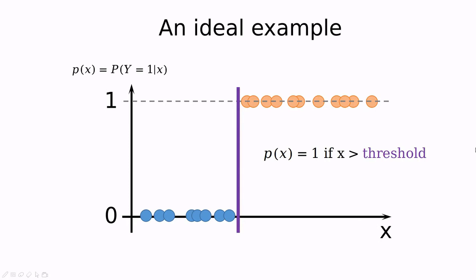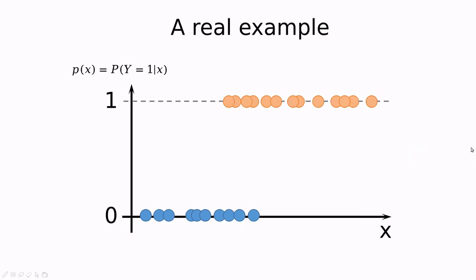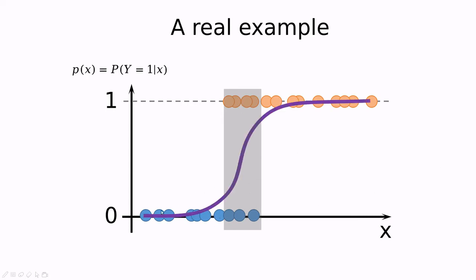But this is not what happens in reality. In reality, we have a fuzzy region in which there is some overlapping between the blues and the oranges. If we try to draw a line here, we're going to make a classification error. So instead, we're going to use probabilities — saying this is orange with this probability, and this is blue with that probability. We're going to use a smooth function which is zero and one on the extremes but more continuous in the middle.